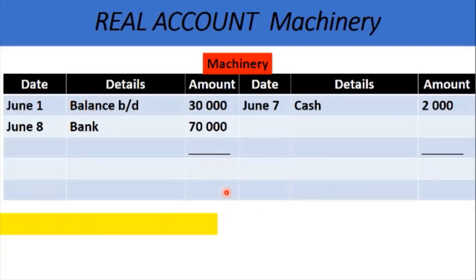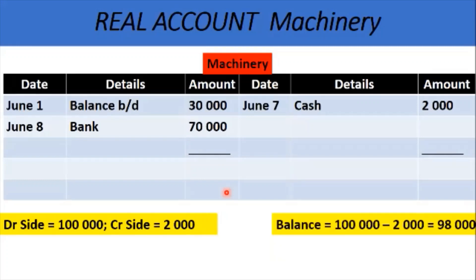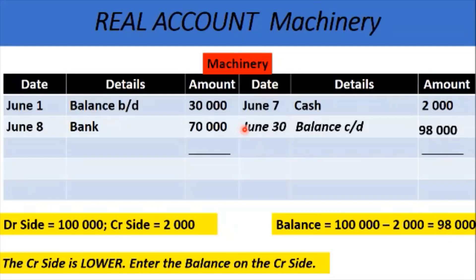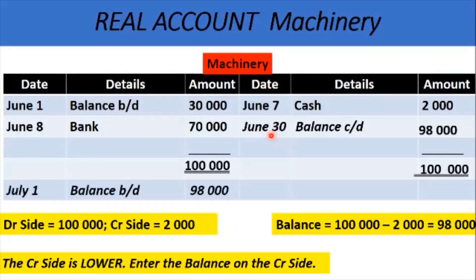To summarize the steps: first, add up the two sides. Next, calculate the balance and notice which side is lower. Enter the balance on the lower side — in this case the credit side. In the details column, enter balance carried down, with the date being the last day of the month or last day of the year. Next, total both sides, then bring down the balance for the next month on the first day of that month.